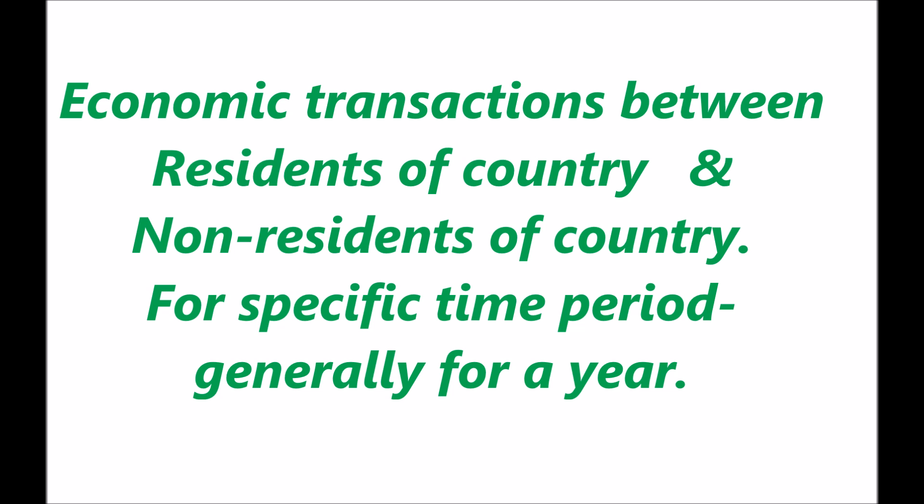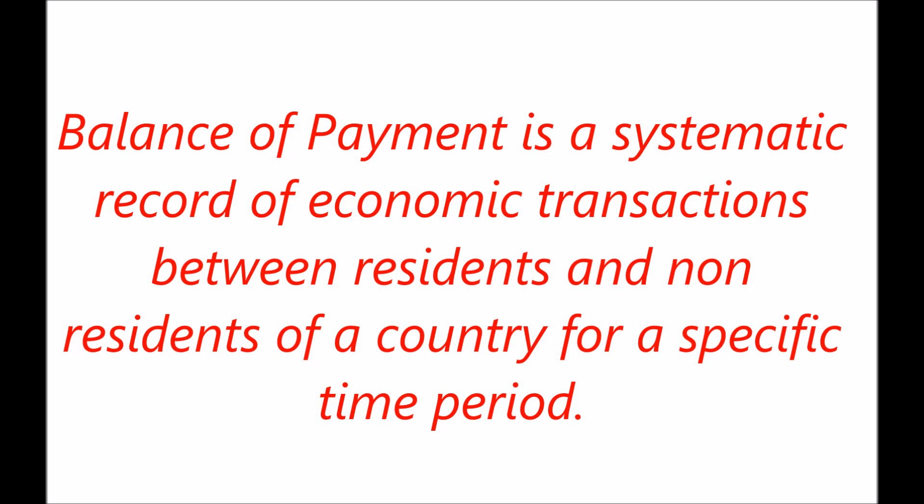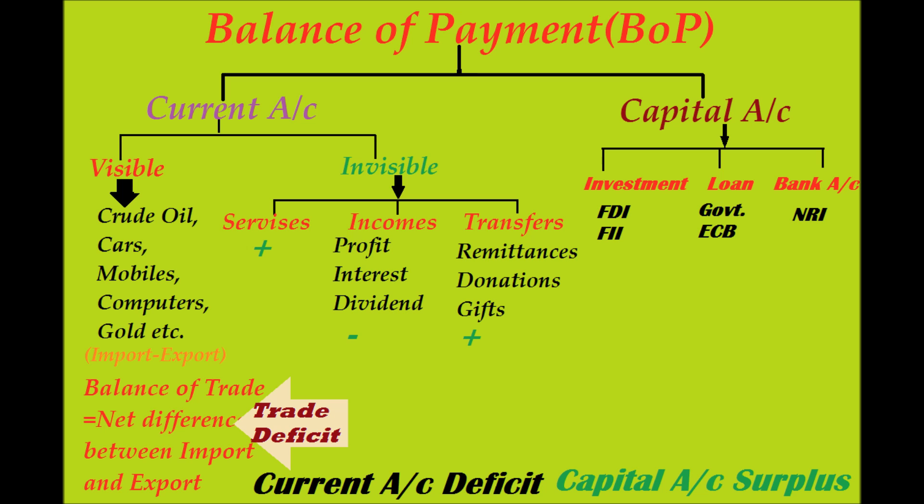This record covers economic transactions between residents of a country and non-residents of a country, and it is for a specific time period — generally one year. So it is clear that Balance of Payment is a systematic record of economic transactions between residents and non-residents of a country for a specific time period.